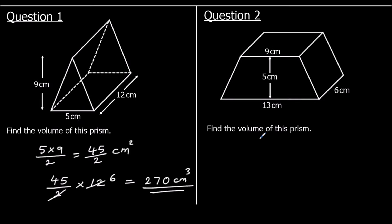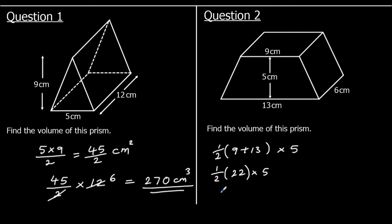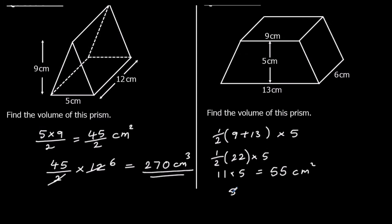For question two we've got a trapezium. The area is half the sum of the parallel sides — so half of 9 plus 13 times the distance between them. 9 plus 13 is 22, half of 22 is 11, times 5 is 55. So the area of the shape on the front is 55 centimeters squared. Times how far back it goes, which is 6: 50 times 6 is 300, 5 times 6 is 30, so we've got 330 centimeters cubed.